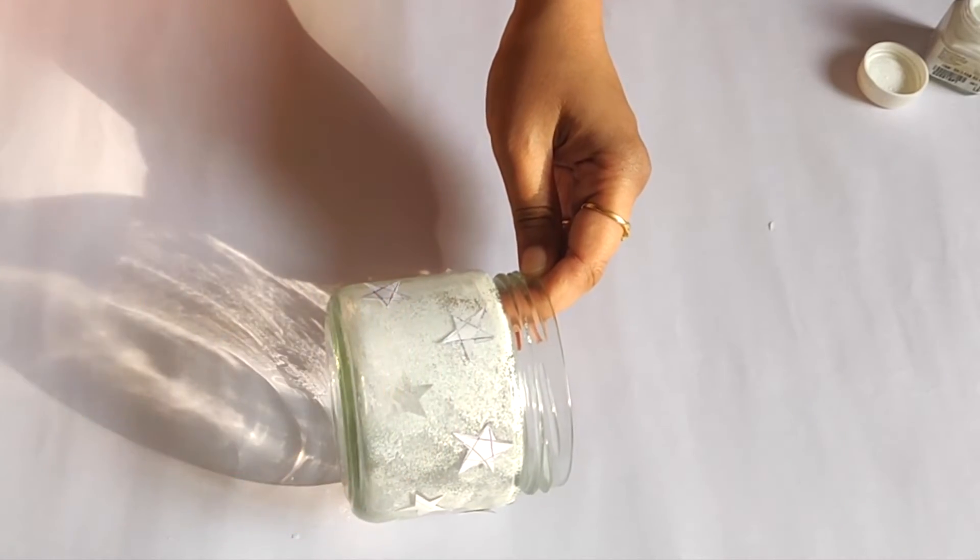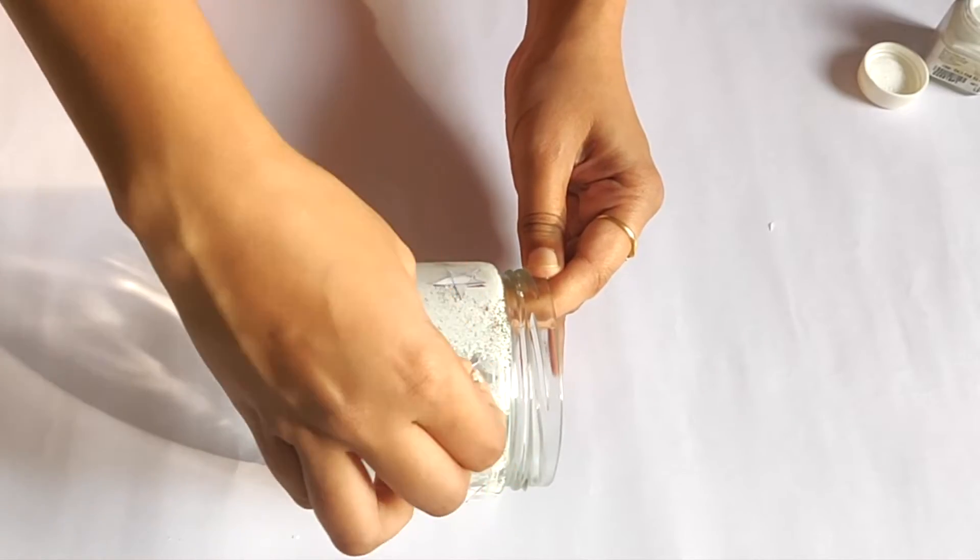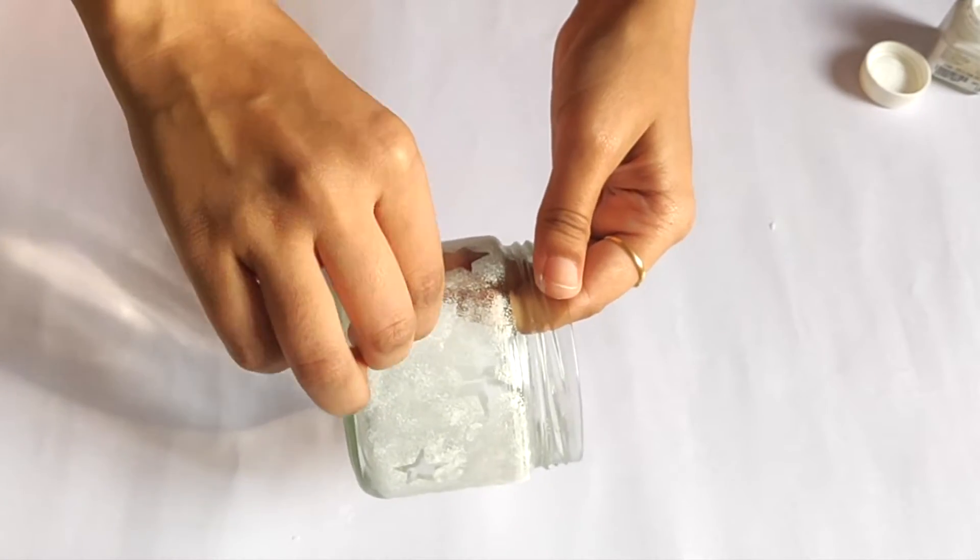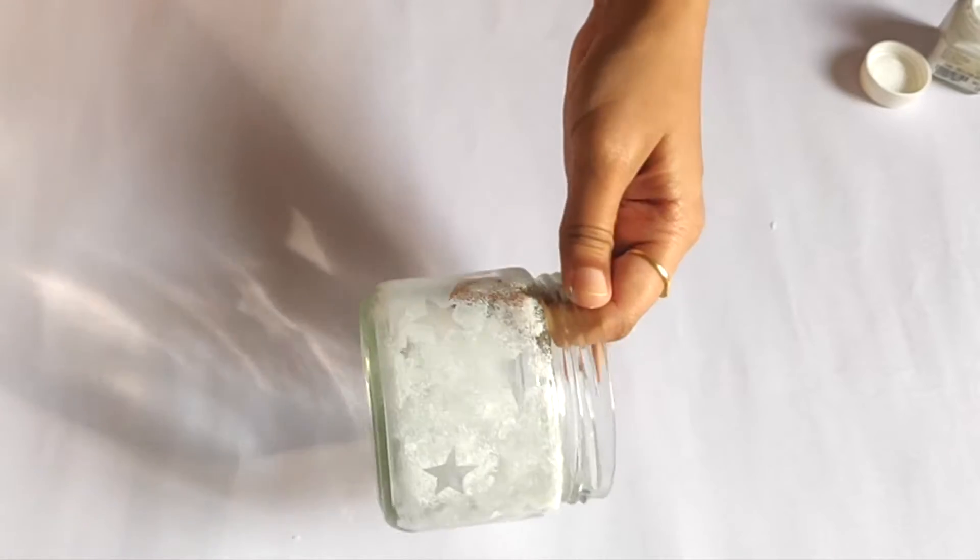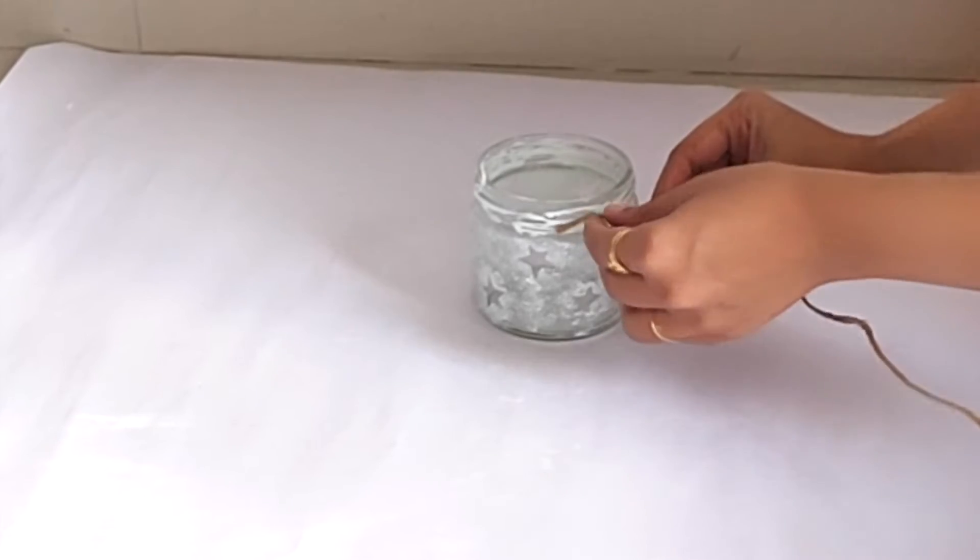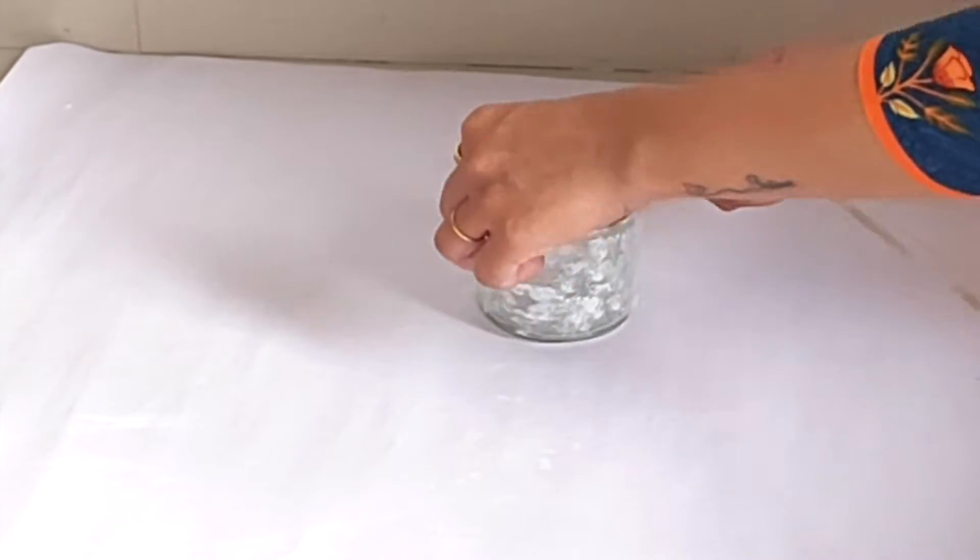Now remove all the stars from the jar. And this will make a beautiful star pattern on the glass jar. Now I am spreading Fevicol on the top of the jar and wrapping a jute rope around it.